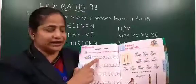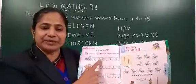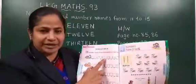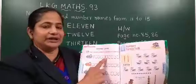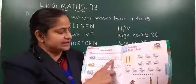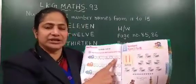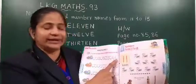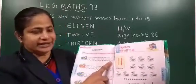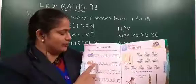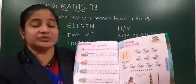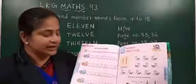Now three is already given. Three ke baad konsa number ae ga? Four. Or five hai wahan. Or five ke baad six aapko wahan likhna hai. Or seven hai. Phir seven ke baad eight. Phir last box nine diya hai. Or nine ke baad konsa number ae ga? Ten. Aapko one to five engines pe number likhna hai.